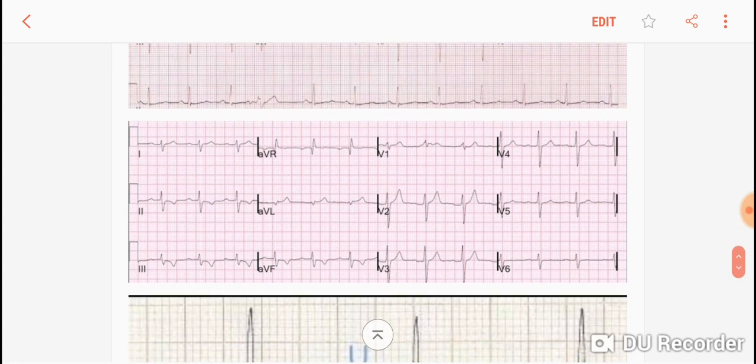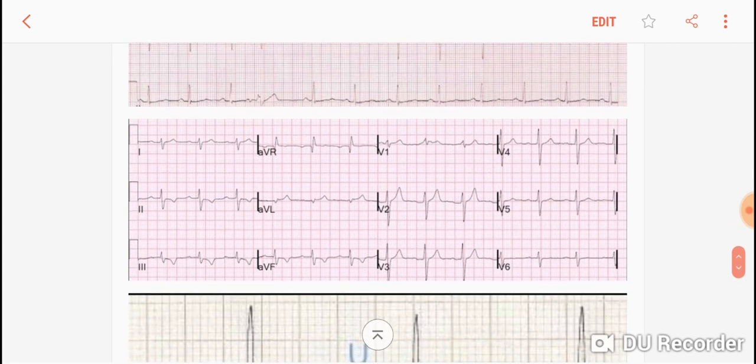In this diagram figure you have 2, 3, AVF T wave inversions, so this is an inferior wall NSTEMI if the cardiac markers are present.